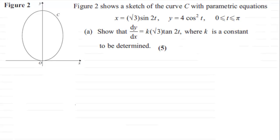Okay, welcome back if you had a go. So what we've got here is figure two, which shows the sketch of the curve C with parametric equations x equals root three times sine two t and y equals four multiplied by the cosine squared of t. And t is in radians, greater than or equal to zero but less than or equal to pi radians. And what we've got to do is show that dy by dx equals k root three tan two t, where k is a constant to be determined.